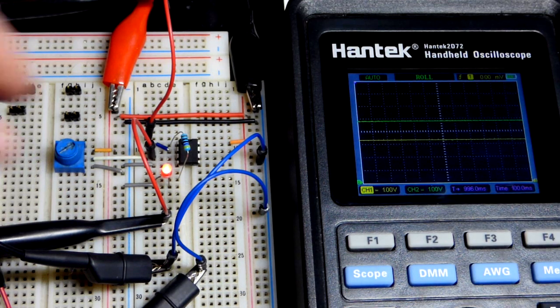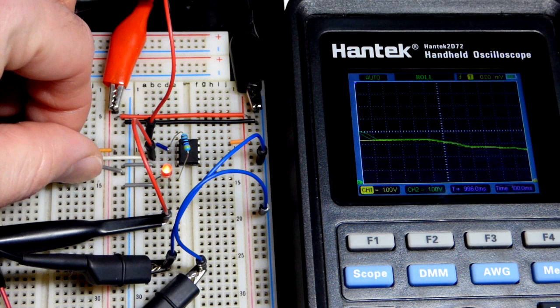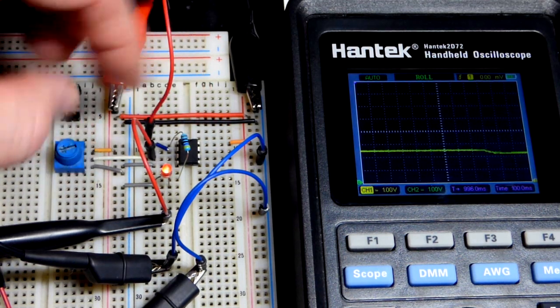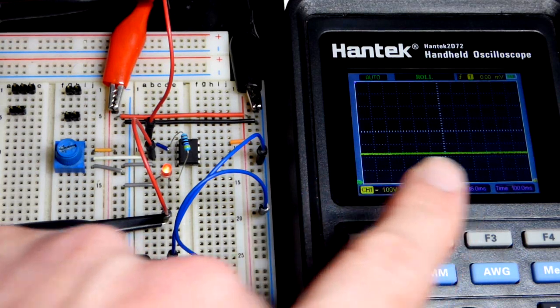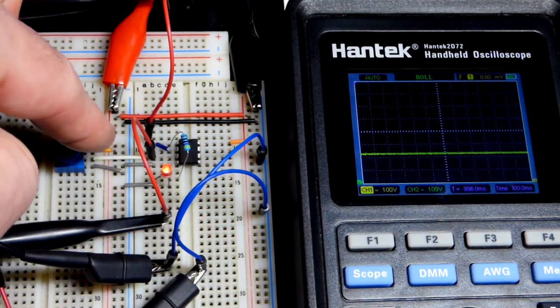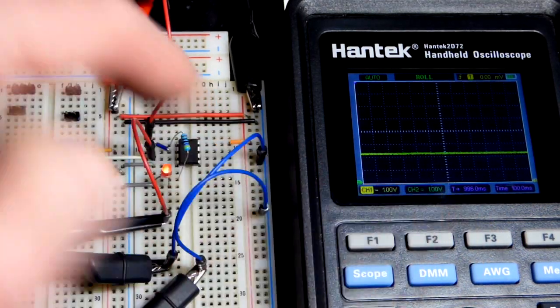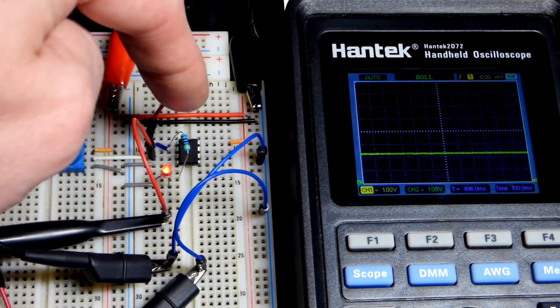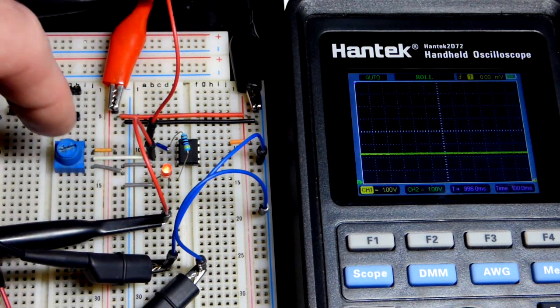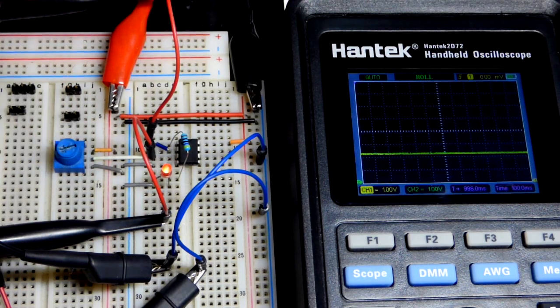So you always have to work within the limitations of whatever you use. But the basic property of an op amp voltage follower is that whatever the input voltage is the output voltage will be the same. The op amp provides the power so you got to live within the op amp's power limitations instead of the trim pot's power limitations.